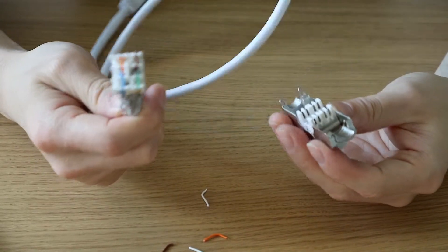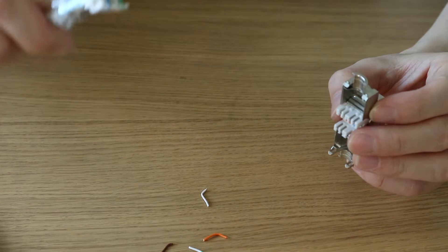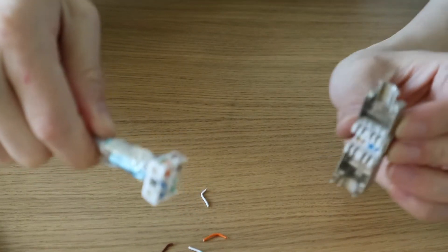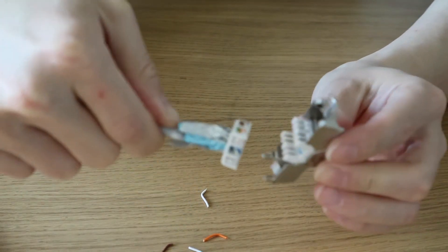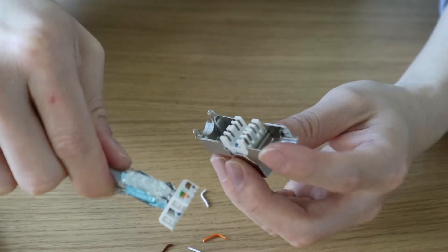Right, now just insert this bit into that bit according to the color coding. So here is the brown there and here is the brown there. So what we are going to do...